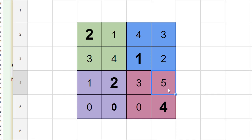Following our rule for backtracking, we're going to replace this five with a zero. We're going to go to the previous square that was not already given to us at the starting gate — and that's this square right here. So we're going to try to increment this square.